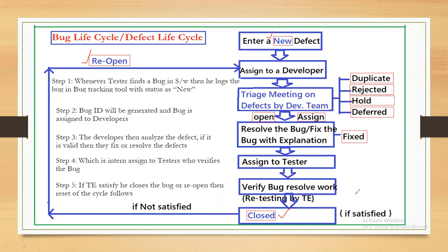To summarize: bug life cycle describes various statuses of a defect from identification to closed. Testers provide three statuses — New, Closed, Reopen — while developers provide: Duplicate, Rejected, Hold, Deferred, Open, Assigned, and Fixed.